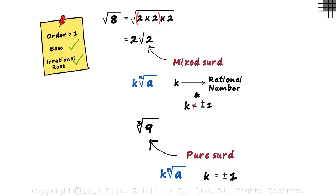Similarly, this mixed surd, two root two, can be written as root eight. So we should know that sometimes pure surds can be written as mixed surds and vice versa. But it's important to know that it does not hold good always.